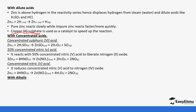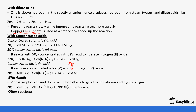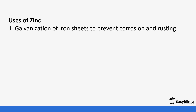With 50% nitric acid, zinc forms nitrogen(II) oxide, water, and zinc nitrate. With concentrated nitric acid, it forms nitrogen(IV) oxide, zinc nitrate, and water — this also reminds us of the preparation of NO and NO₂ in nitrogen and its compounds. Since zinc is amphoteric, it reacts with sodium hydroxide to form sodium zincate. Zinc also burns in chlorine to give zinc chloride and combines with sulfur to form zinc sulfide.